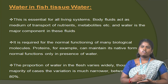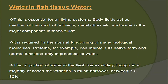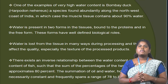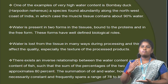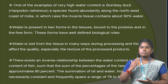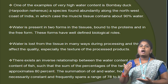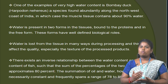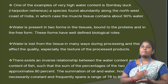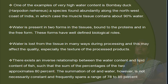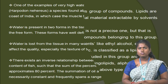The proportion of water in fish varies widely, though in the majority of cases the variation is much narrower, between 70 to 80%. One example of very high water content is the Bombay duck, a species found abundantly along the northwest coast of India, in which the muscle tissue contains about 90% water. Water is present in two forms in the tissues: bound to protein and in free form. Water is lost from tissue in many ways during processing, which may affect quality, especially the texture of the processed product. There exists an inverse relationship between water content and lipid content of fish such that the sum of the two approximates 80%.